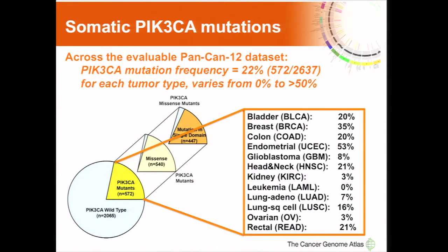Somatic PIK3CA mutations have an overall mutation frequency in this pan-cancer dataset of 22 percent — that's 572 out of the 2,637 cases. But the frequency per tumor type is quite variable, ranging from 0 percent as seen in AMLs to greater than 50 percent as seen in uterine endometrial cancer, with intermediate values as shown.